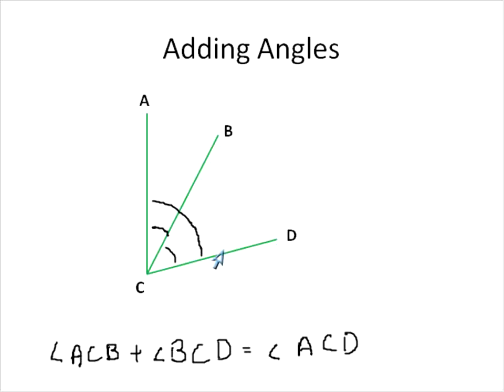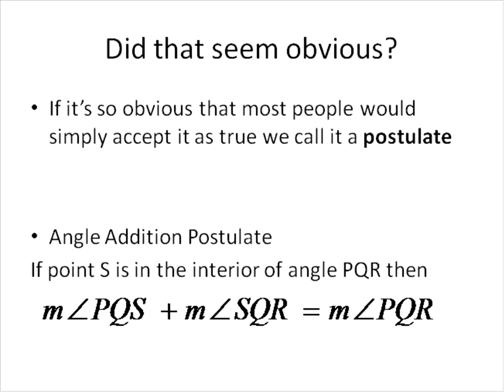Now, because this is intuitively obvious, and we have a word for that, a postulate. Something that is basically so obvious that it's just accepted as fact, and we don't have to prove that it's true. The angle addition postulate. If the point S is in the interior of angle PQR, then angle PQS plus angle SQR is equal to PQR.